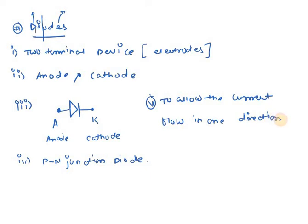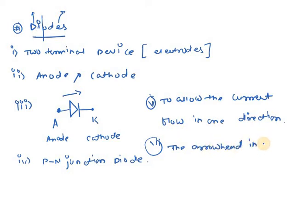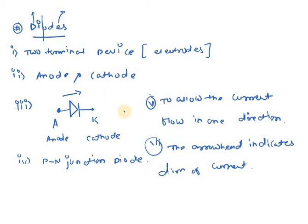The most common function of a diode is to allow current to flow in one direction only. This is the most important point as far as diodes are concerned. The arrowhead in the diode symbol indicates the direction of current. In most competitive examinations, this question has been asked: what does the arrowhead in a diode indicate? It simply indicates the direction of current.